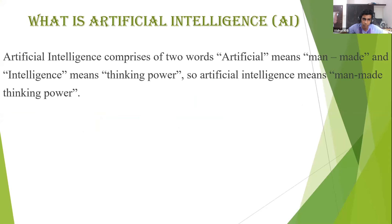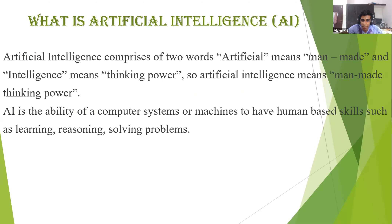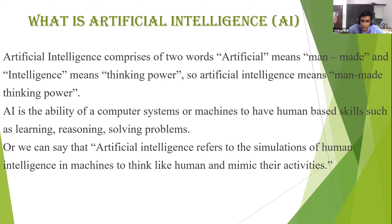What is artificial intelligence? In the term itself, there are two words: artificial and intelligence. Artificial means man-made, and intelligence means thinking power. So when we combine these words, artificial intelligence means man-made thinking power. It is the ability of computer systems or machines to have human-based skills such as learning, reasoning, and solving problems. It refers to the simulation of human intelligence in machines programmed to think like humans and mimic their actions.